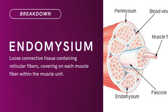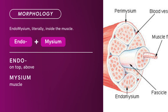Compound Term: Endomysium. Brief definition — loose connective tissue containing reticular fibers that cover each muscle fiber within the muscle unit. Term Morphology: Endomysium literally means inside the muscle. It's a compound of Endo plus mysium. Endo means inside, mysium means muscle. Endomysium — there you have it.